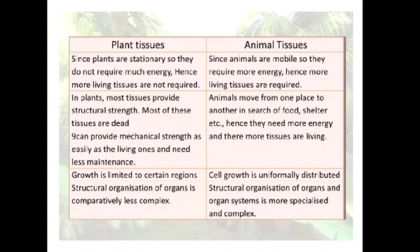To know the differences between plant tissues and animal tissues: since plants are stationary they do not require much energy, hence fewer living tissues are required. Animals are mobile so they require more energy, hence more living tissues are required. In plants, most tissues provide structural strength and most of these tissues are dead — they provide mechanical strength and need less maintenance. Animals move from place to place in search of food and shelter, hence they need more energy and more living tissues.